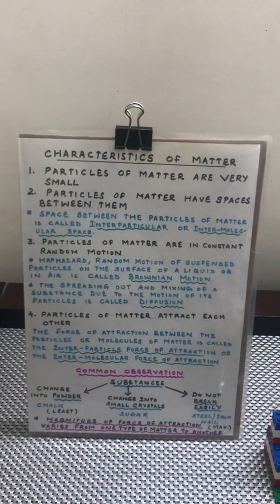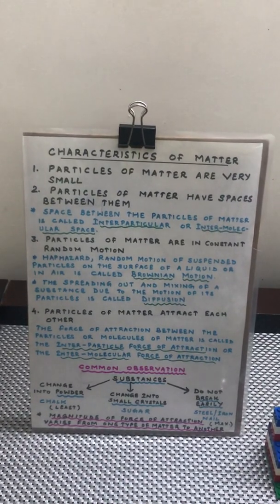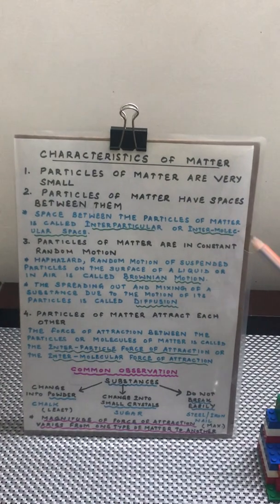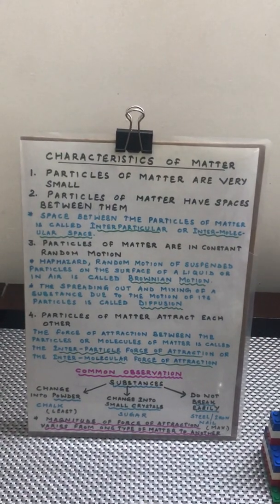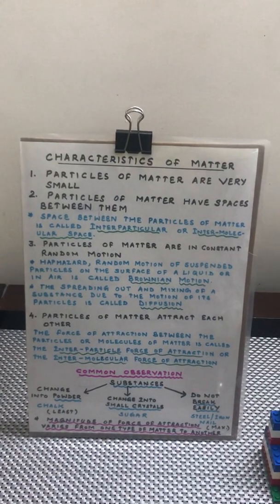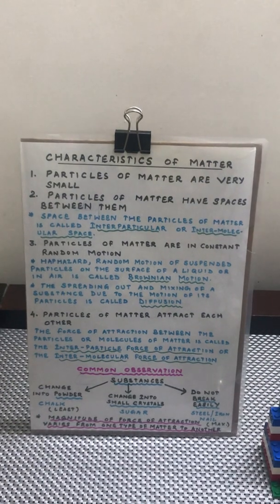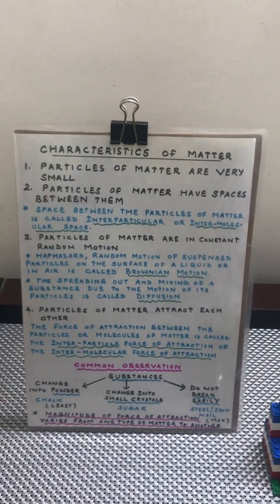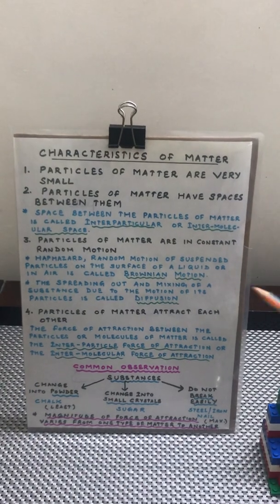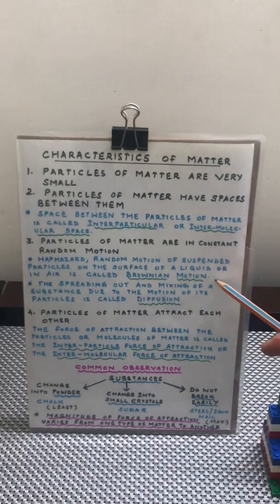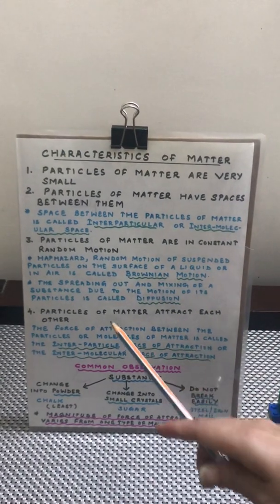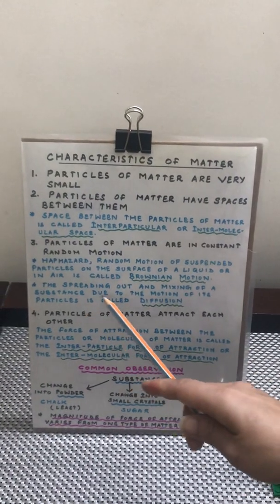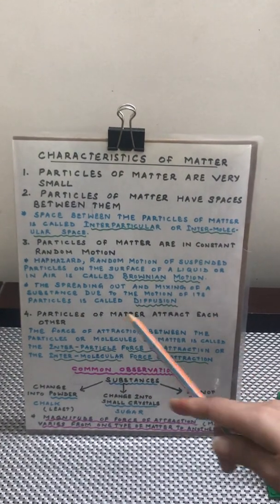Basically that is known as Brownian motion. Or if you enter a dark room and switch on a torchlight, you see certain dust particles moving very fast — those dust particles are showing Brownian motion. Now, the spreading out and mixing of a substance due to the motion of its particles is called diffusion.